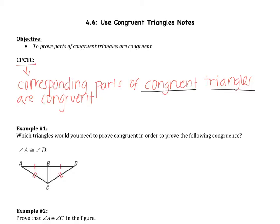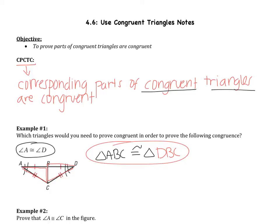Let's look at example one. It asks which triangles you would need to prove congruent in order to prove that angles A and D are congruent. Those are corresponding parts of the left triangle and the right triangle. So you would need to prove that triangle ABC is congruent to triangle DBC — following the tick mark order: one tick mark, middle, two tick marks. You'd have to first prove this congruence before you could show that A and D were congruent.